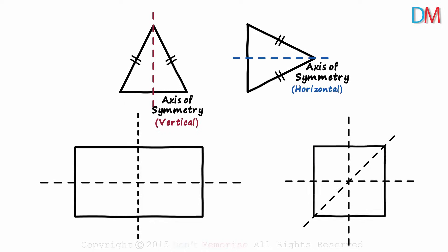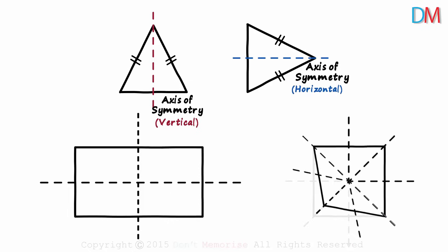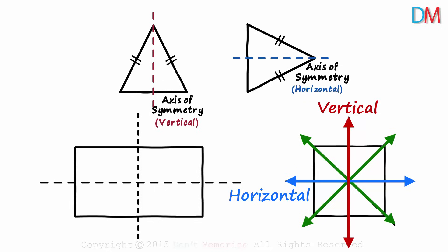And even if we fold it along this diagonal, these two parts overlap exactly. So a square has four axes of symmetry: horizontal, vertical and the two diagonals.